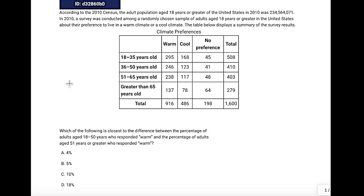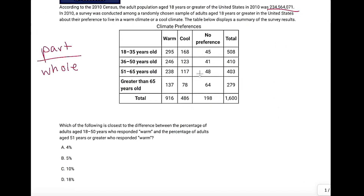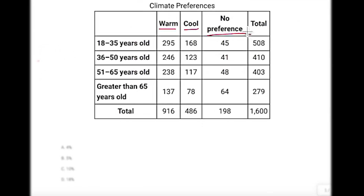Next up, we've got sneaky percentage problems. Percents are just fancy ways of making ratios. Especially with these charts, we want to use the rule of part over whole to find the percents. According to the 2010 census, the adult population aged 18 years or greater in the United States in 2010 was a large number. A survey was conducted among a randomly chosen sample of adults about their preferences to live in a warm climate or a cool climate. The table displays warm, cool, no preference, and the number of people — 1,600 total surveyed.